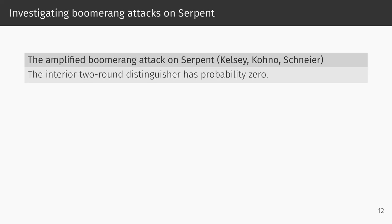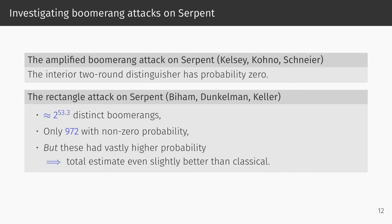To put this model to a test, we re-evaluated the probabilities of some classical attacks on the block cipher Serpent. The first attack we looked at was the amplified boomerang attack by Kelsey, Kono, and Schneier. That attack uses a single boomerang where the interior two rounds have a probability of 0, rendering the entire boomerang distinguisher impossible. The second attack was the rectangle attack on Serpent by Biham, Dunkelmann, and Keller. That attack uses a more refined approach where the distinguisher is made up of 2 to the 53.3 individual boomerangs. Evaluating the inner two rounds revealed that only 972 of those have a non-zero probability. Interestingly, because these boomerangs have a vastly higher probability than the classical estimate suggests, our estimate of the total probability ends up being even higher than the original classical estimate.